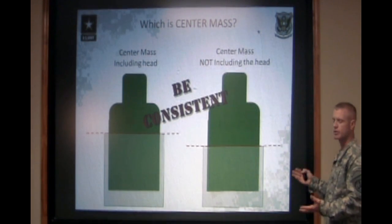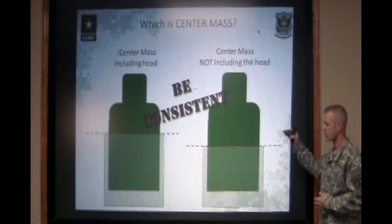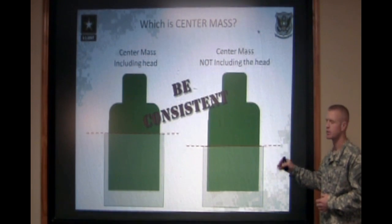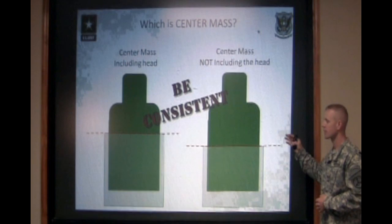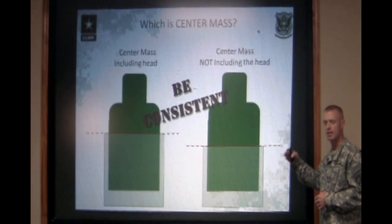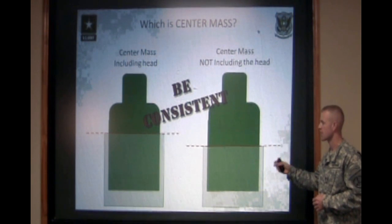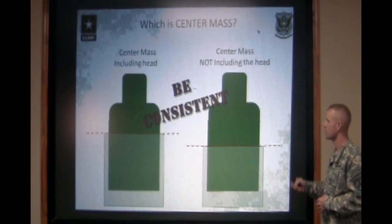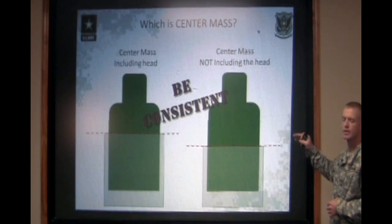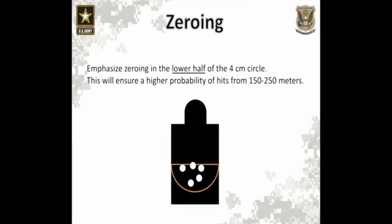Aiming centered on that bulky body allows me to hold center mass very consistently from shot to shot. The most important thing you can do is be consistent with whichever hold you use — this is going to allow your zero to stay the same from time to time on the rifle range, from shot to shot. Make sure you're holding the exact same hold each shot.